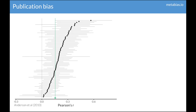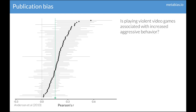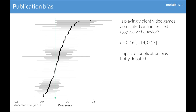First of all, let's look at publication bias. Here's an example meta-analysis we'll look at. This meta-analysis examined whether playing violent video games is associated with increased aggressive behavior. As you can see here in green, the meta-analytic estimate of this association was 0.16. But the potential impact of publication bias on these results has been highly debated.